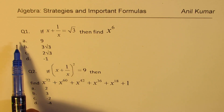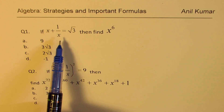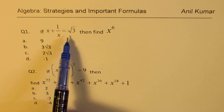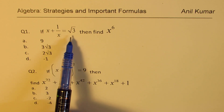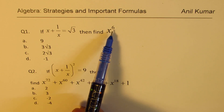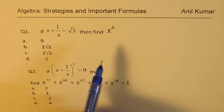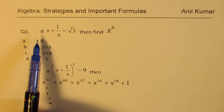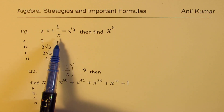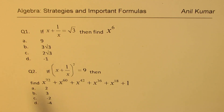Question number one is: if x plus one over x is equal to square root of three, then find the value of x to the power of six. We are given that x plus one over x is equal to square root of three, and four choices are given.